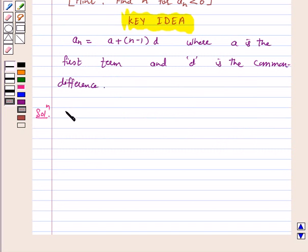Given AP is 121, 117, 113 and so on. Here, a = 121 which is the first term, and d is the common difference, 117 - 121 = -4.